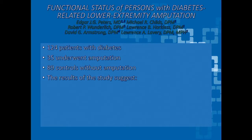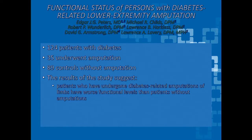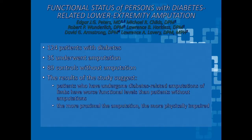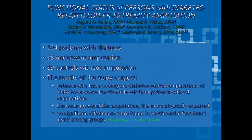Looking at functional status of persons with diabetes and related lower extremity amputation, the hypothesis was that higher amputation level leads to more depression and dysfunctional outcomes. The study had 35 amputees among 124 diabetes patients and 89 controls. Using the sickness impact profile — measuring independence, psychosocial level, and function — patients who underwent diabetes-related amputations had worse functional levels than those without amputations, and the more proximal the amputation, the more physically impaired. But there was really no significant difference found in psychosocial functional levels among the groups. So psyche, over time, can change.